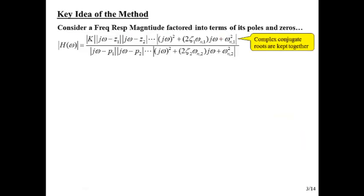We're going to sneak up on this. We're going to have to slog through a little bit of math first. But once we get through all this, the actual process is really quite simple and straightforward. Suppose we've got some sort of frequency response that came from a transfer function. We've factored that transfer function H(s) into a bunch of factors in the numerator and a bunch of factors in the denominator.